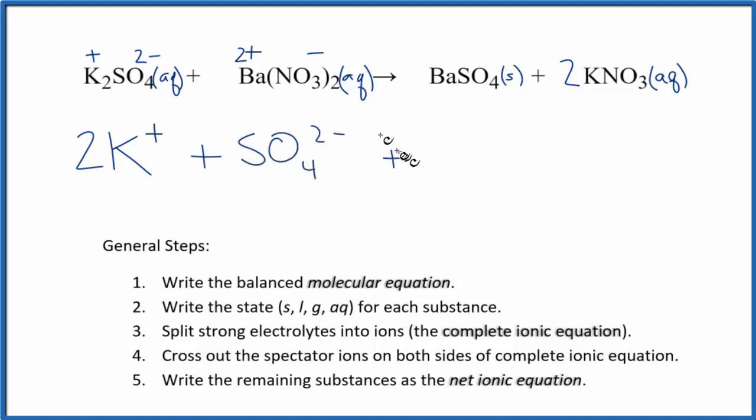Plus we have the barium ion, Ba2 plus, and then we have the nitrate here, NO3 minus. And we have two nitrates, so we need to put a coefficient of two in front of this.